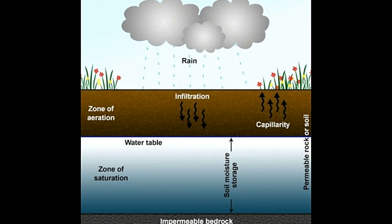Now that we know what the zone of aeration and the zone of saturation are, let's list out the differences between them. First, the zone of aeration is located immediately beneath the root zone, while the zone of saturation lies below the zone of aeration. Second, the soil and rocks in the zone of aeration have pores which are partially filled with water and air, whereas the zone of saturation comprises rocks and soil whose pores are completely saturated with water. Third, the zone of saturation lies beneath the water table, while the zone of aeration lies above it. Fourth, water moves from the aeration layer to the saturation layer in a process known as infiltration, while water rises against gravity from the saturation layer to the aeration layer through a process known as capillarity.